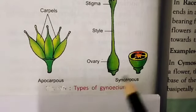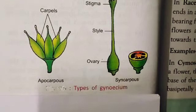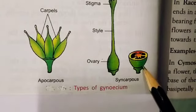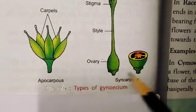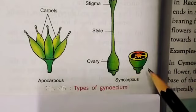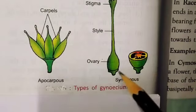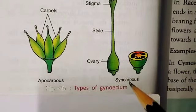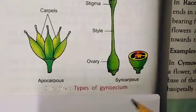Next is syncarpous gynoecium. In syncarpous gynoecium, the carpels are fused. In this condition, the gynoecium is called syncarpous. The fused form includes stigma, style, and ovary. The fused form of carpels is said to be syncarpous gynoecium. Examples of syncarpous gynoecium are mustard, china rose, and petunia.